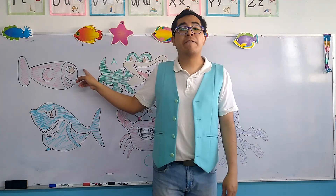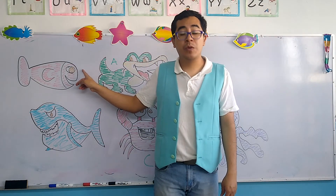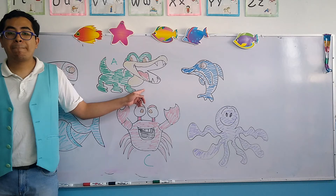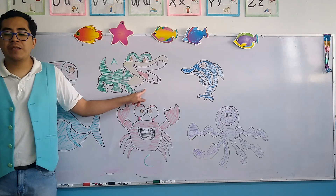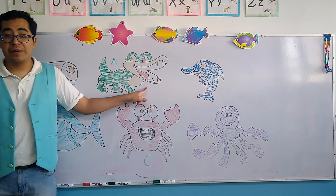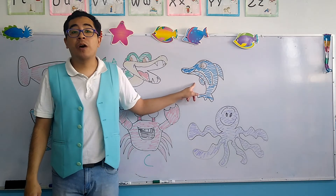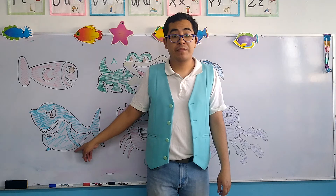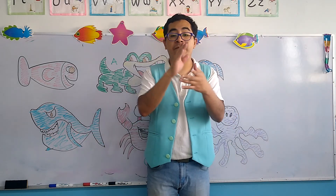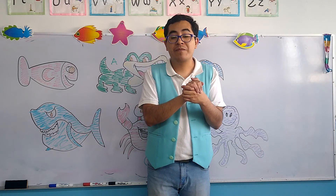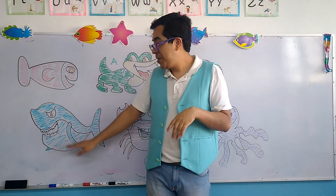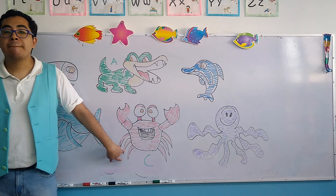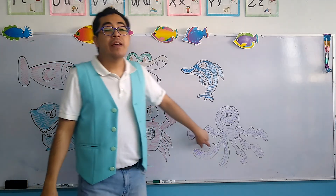Let's begin: fish... alligator — remember, with a little bit more energy — alligator... dolphin... shark. You know, there is a very common and famous song called Baby Shark. We have the shark... the crab... and finally, octopus.